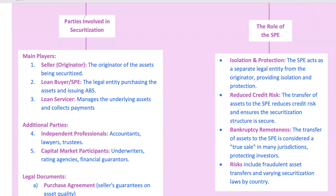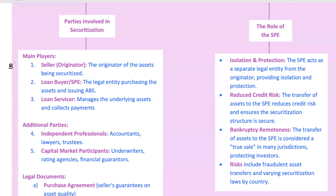A typical securitization deal involves several key players who each play a specific role. The seller or originator is the one who owns and sells the assets to the SPE — in our example, that would be BRWA, which sells the car loans to CLT. The loan buyer, or SPE, like CLT, purchases these assets and issues ABS to investors. The loan servicer, usually the original lender, continues to manage the underlying loans, collecting payments from borrowers and passing them on to the SPE.